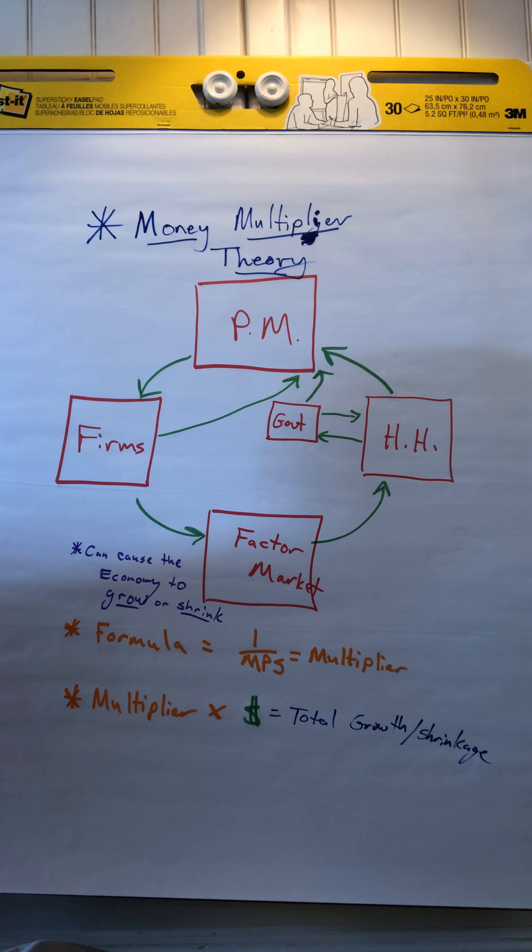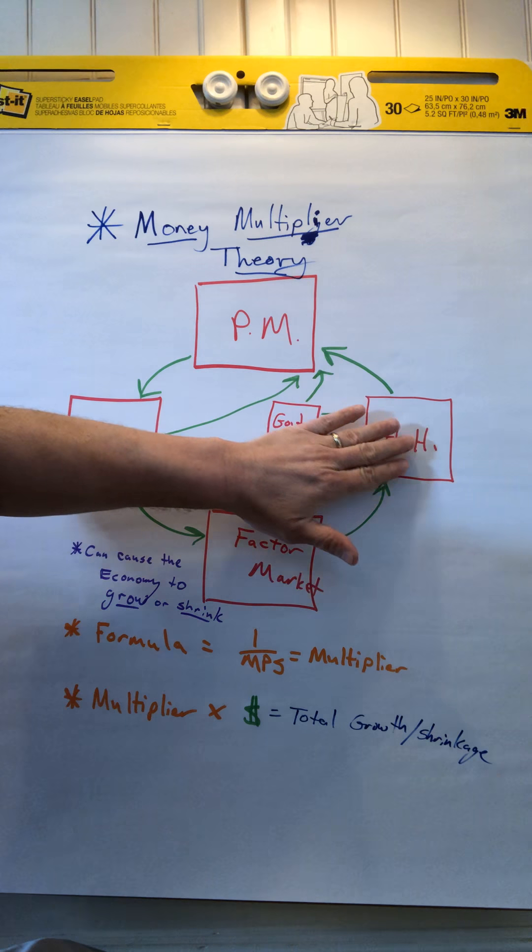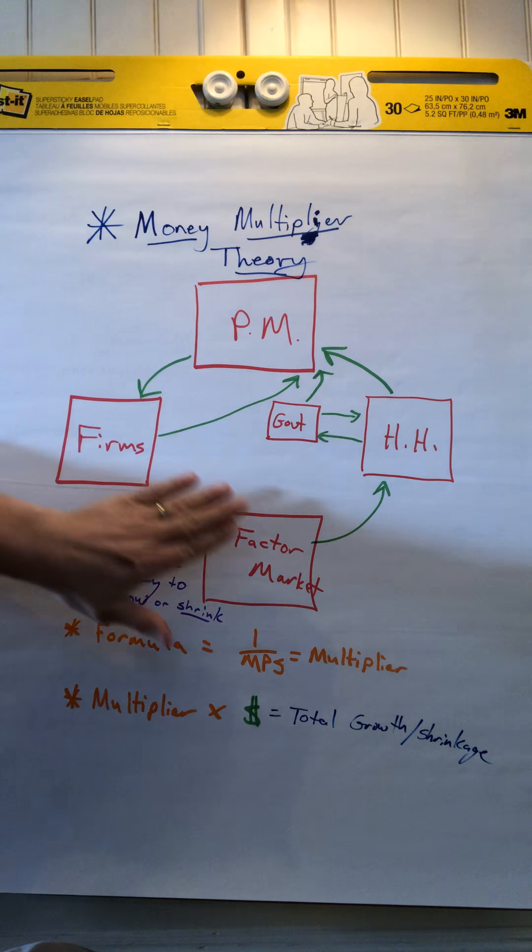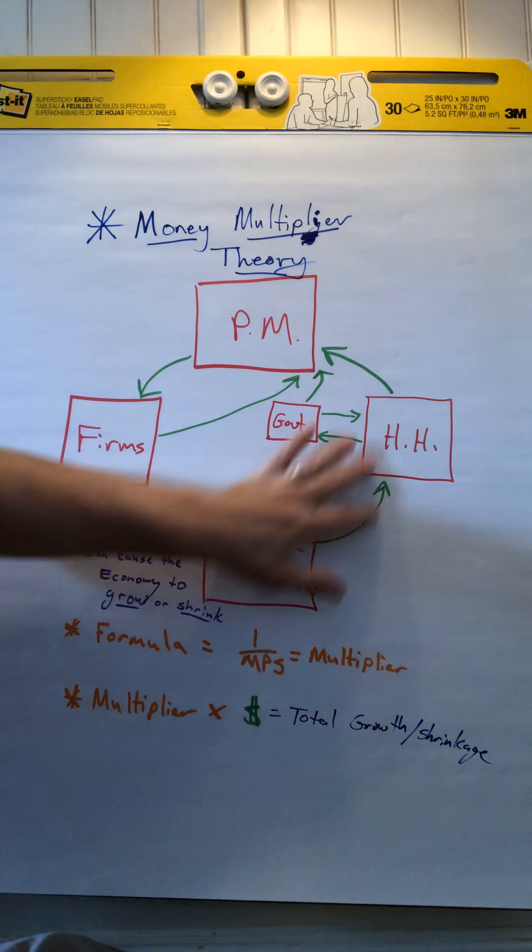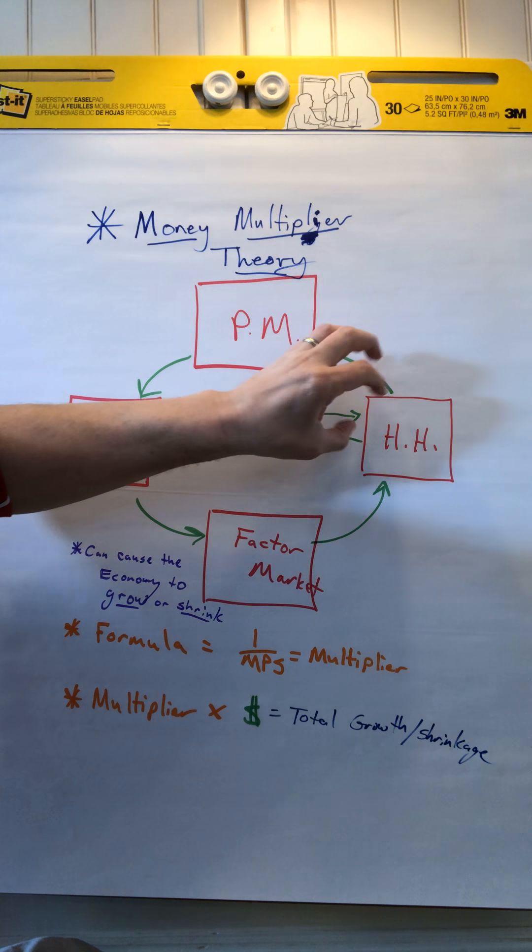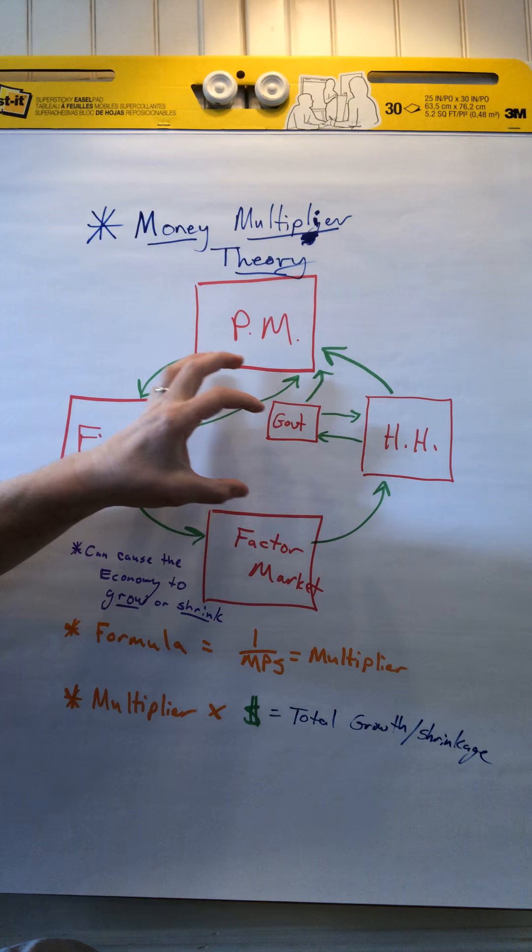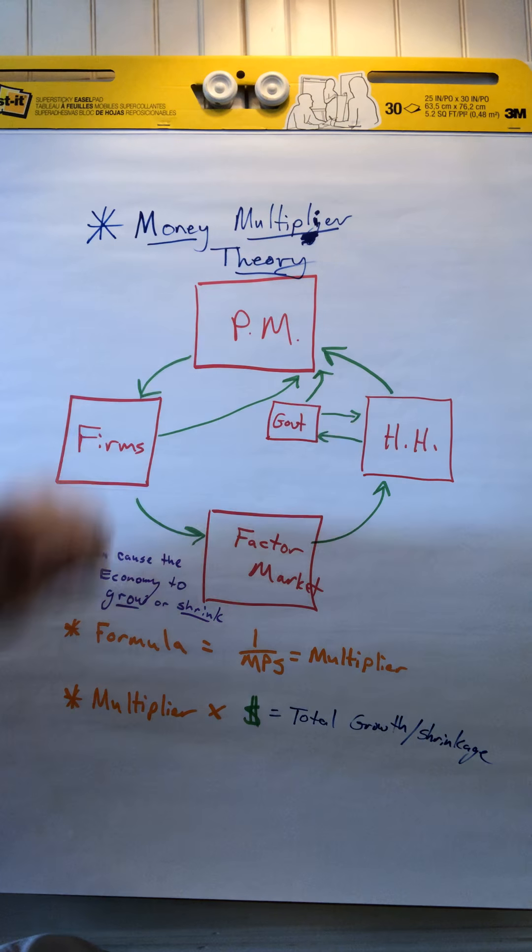All right, today we're going to go through and talk about the money multiplier theory in economics. We're going to take what we learned about with circular flow with the households, the product market, the firms, the factor market, how money circulates throughout the economy, and we're going to learn what happens when money gets injected into the economy and how it supposedly ends up helping the economy grow. And it's all based off the multiplier theory.